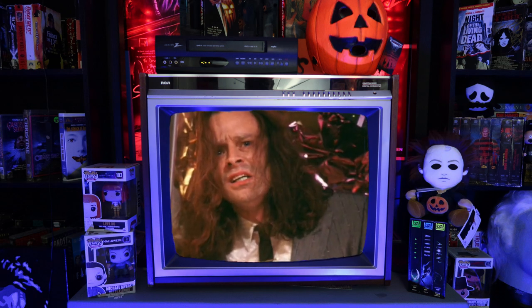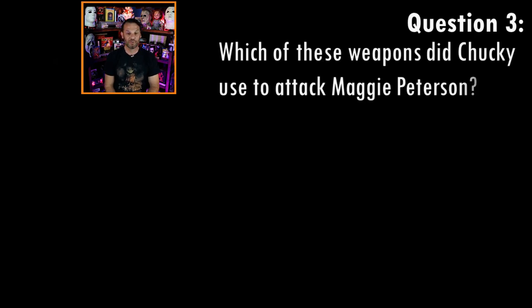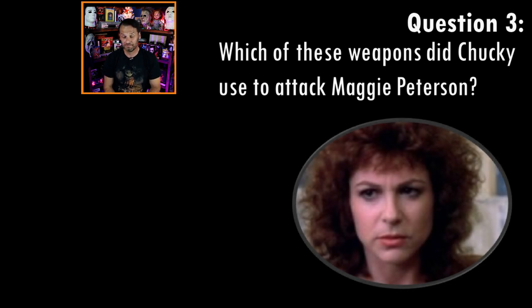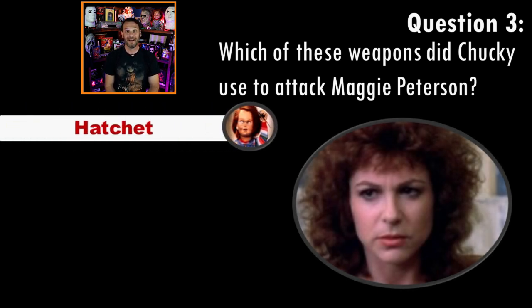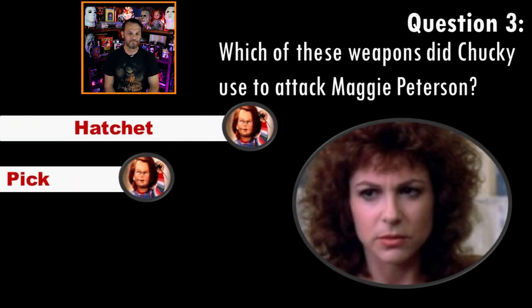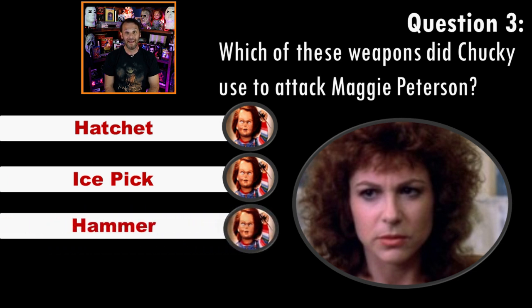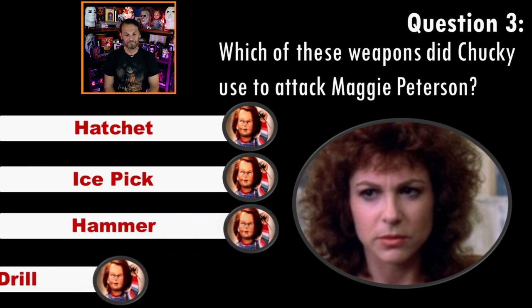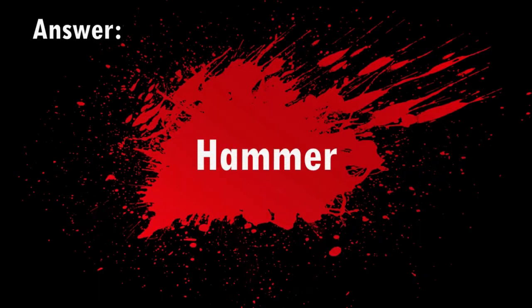Question three: which of these weapons did Chucky use to attack Maggie Peterson? A hatchet, ice pick, a hammer, or a power drill? The answer: a hammer.